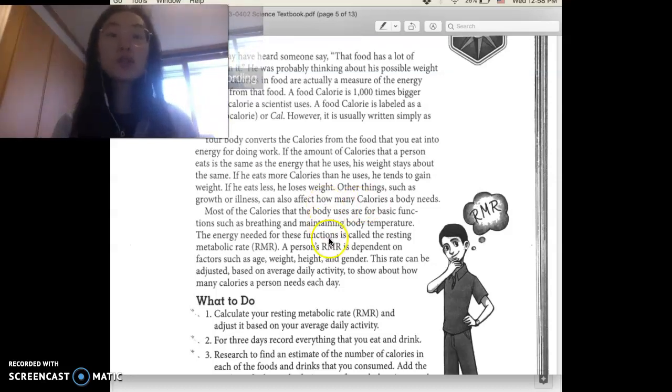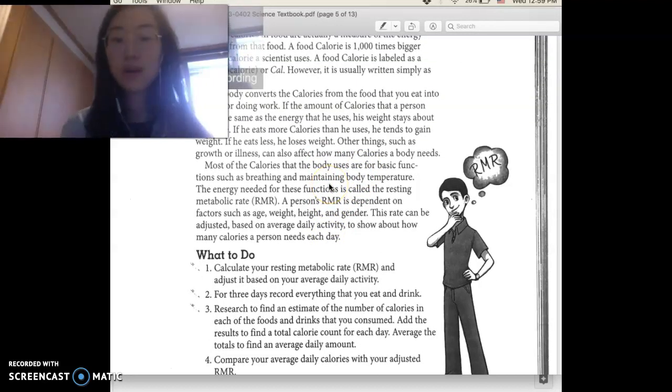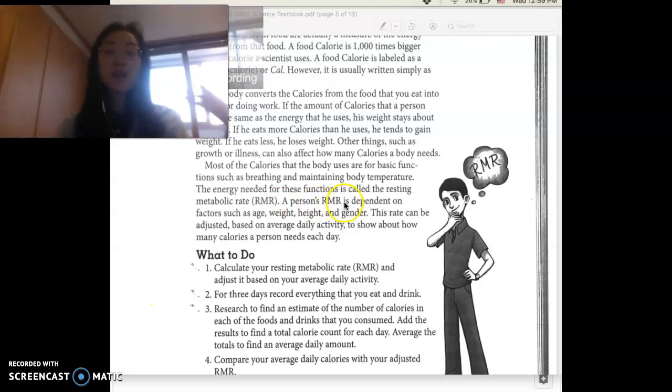Other things such as growth, so how tall you grow, or illness can also affect how many calories a body will need. Most of the calories that the body uses are for basic functions such as breathing and maintaining bodily temperature. The energy needed for this kind of survival is called the resting metabolic rate, RMR, which is what you're going to be calculating today. So a person's RMR is dependent, so it will vary on factors such as age, weight, height, gender.